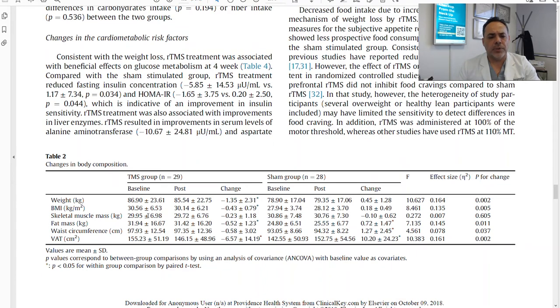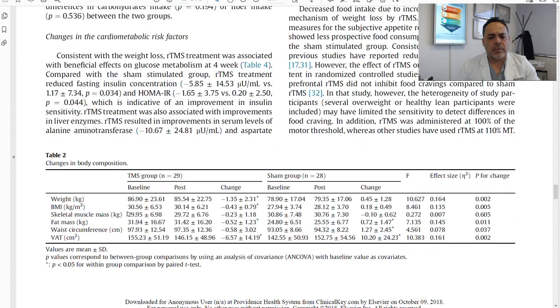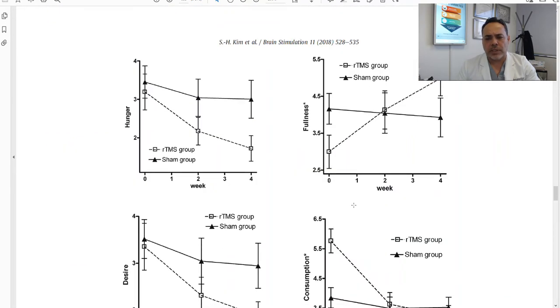The BMI also reduced in the TMS group. Notice that in the sham or placebo arm there was very little change if any, and in terms of the waist circumference there was an actual reduction and this is only with four sessions, which is absolutely amazing.